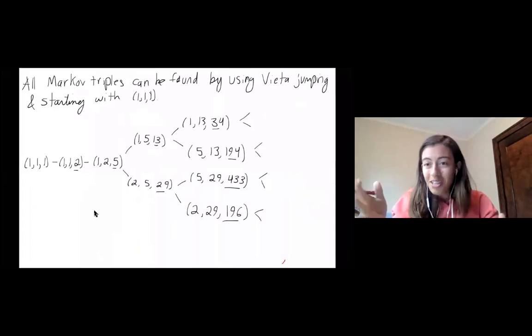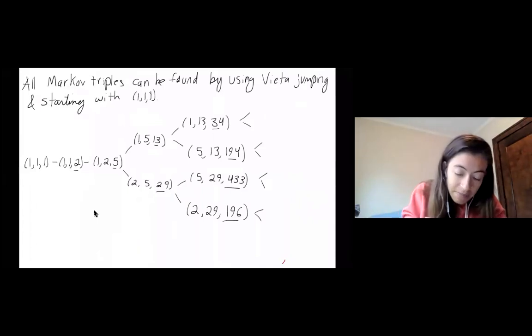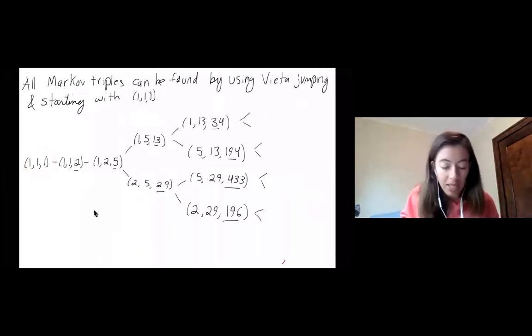So here's a tree again, like you saw in the last talk, starting with 111. And again, since the first one is all ones, it doesn't matter which one you replace. So that's why the first two things have smaller degree, but then every one is three regular.